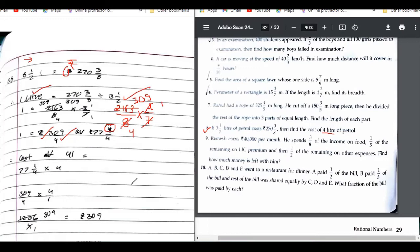Now we have to find the cost of four liters, right? Properly—four liters: 77 one upon four, again into four. Four and four get cancelled.